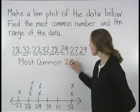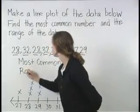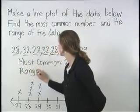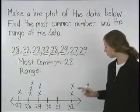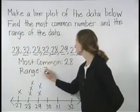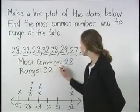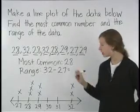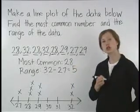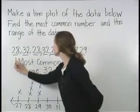We also want to know the range. The range is the difference between the greatest number, 32, and the least number, 27. 32 minus 27 is 5, so the range of the numbers is 5. So, the most common number is 28, and the range is 5.